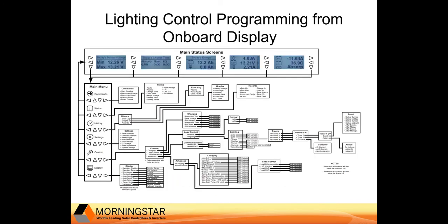This slide shows a meter map. You will need to navigate to the custom programming section to access the lighting control program. In order to access the custom section, you will need to have switches 4, 5, and 6 set to the on position on your charge controller. Also of note, if you want to have the lighting turn on from dusk to dawn, you don't need to custom program the controller — this can be accomplished by setting switch number 1 to the on position.